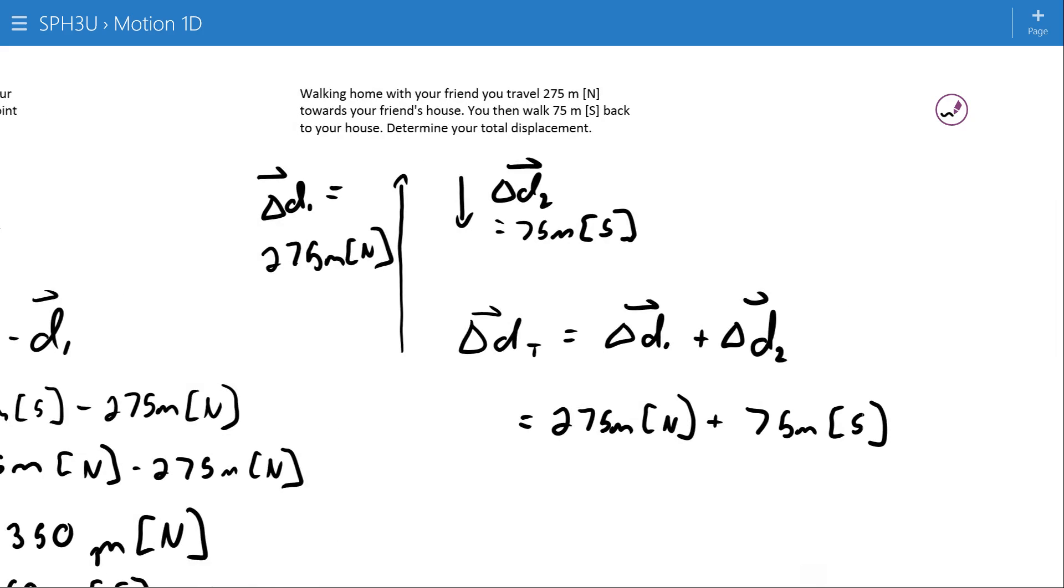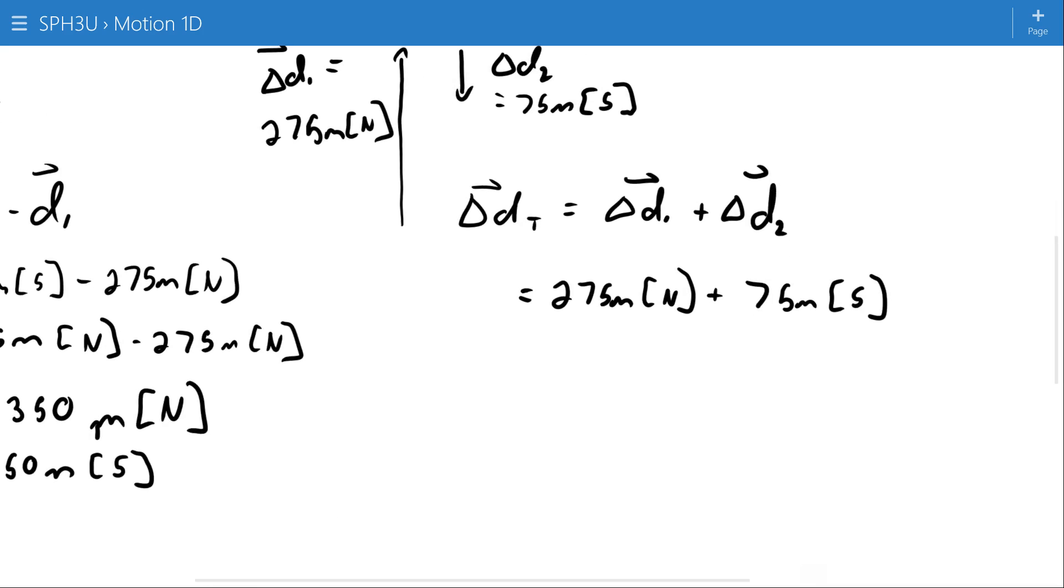Now, it doesn't matter if we're talking displacements, positions, whatever it is, we need a common direction. Again, I'll make north positive. So, 275 meters north plus that means that this 75 meters south must be negative 75 meters north, which gets me a total displacement of 200 meters north.